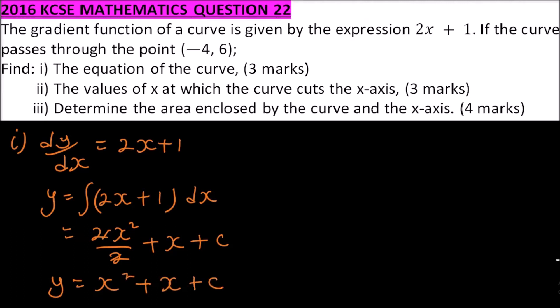But we are told that the graph passes through the point (-4, 6). So we can substitute those coordinates to get the value of c. When y is 6, x is minus 4, so we have 6 equals minus 4 squared, plus minus 4, plus c.